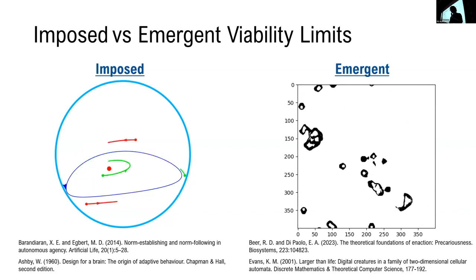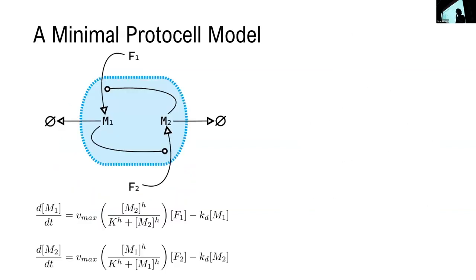To make things a little bit more concrete, we are going to be working with this protocell system, where the concentration of two metabolites, M1 and M2, are synthesized from fixed concentrations of food molecules in the environment. M1 and M2 also help synthesize each other's formation.